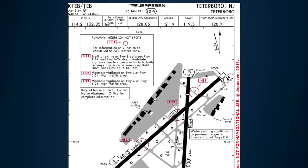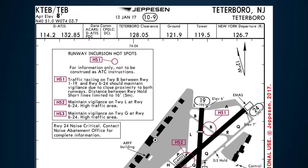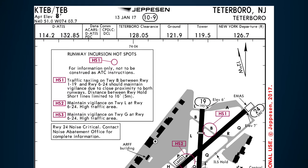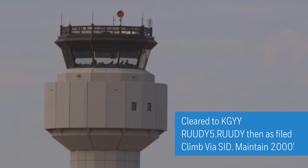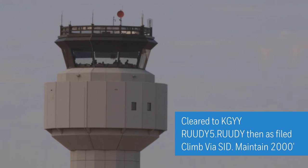Teterboro is using runway 24 for takeoff. ATC has assigned us the following clearance: cleared to KGYY, RUDI-5 departure, RUDI transition, then as filed. Climb via the SID, maintain 2000.